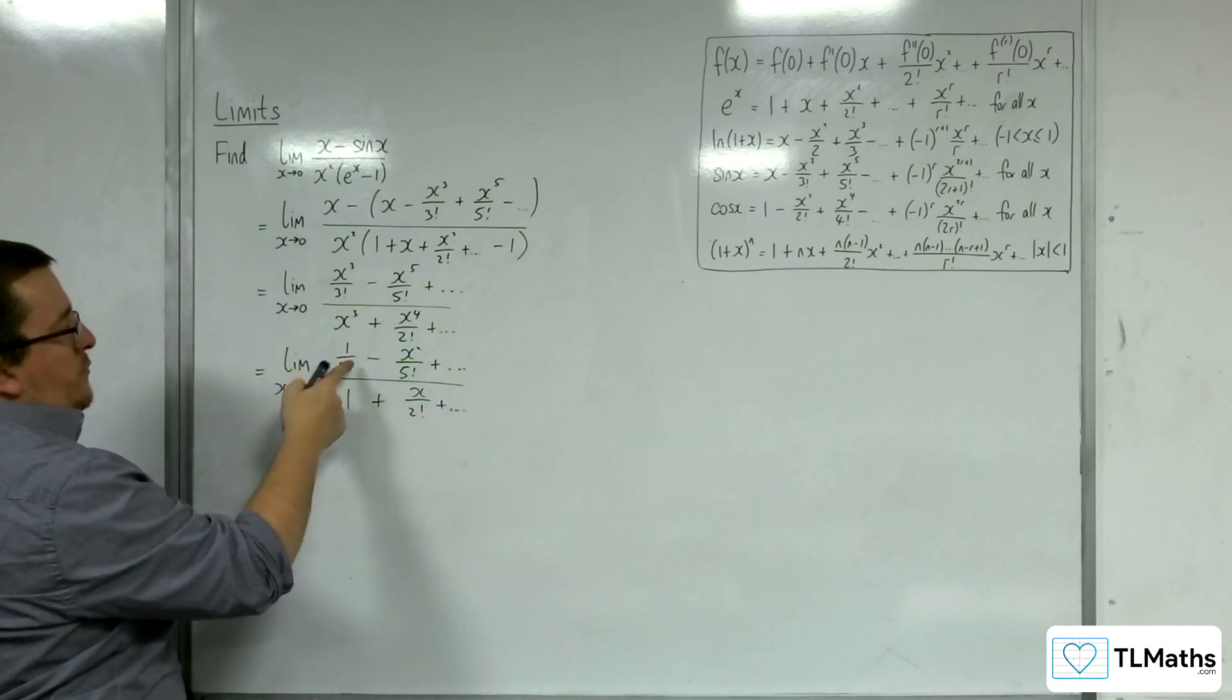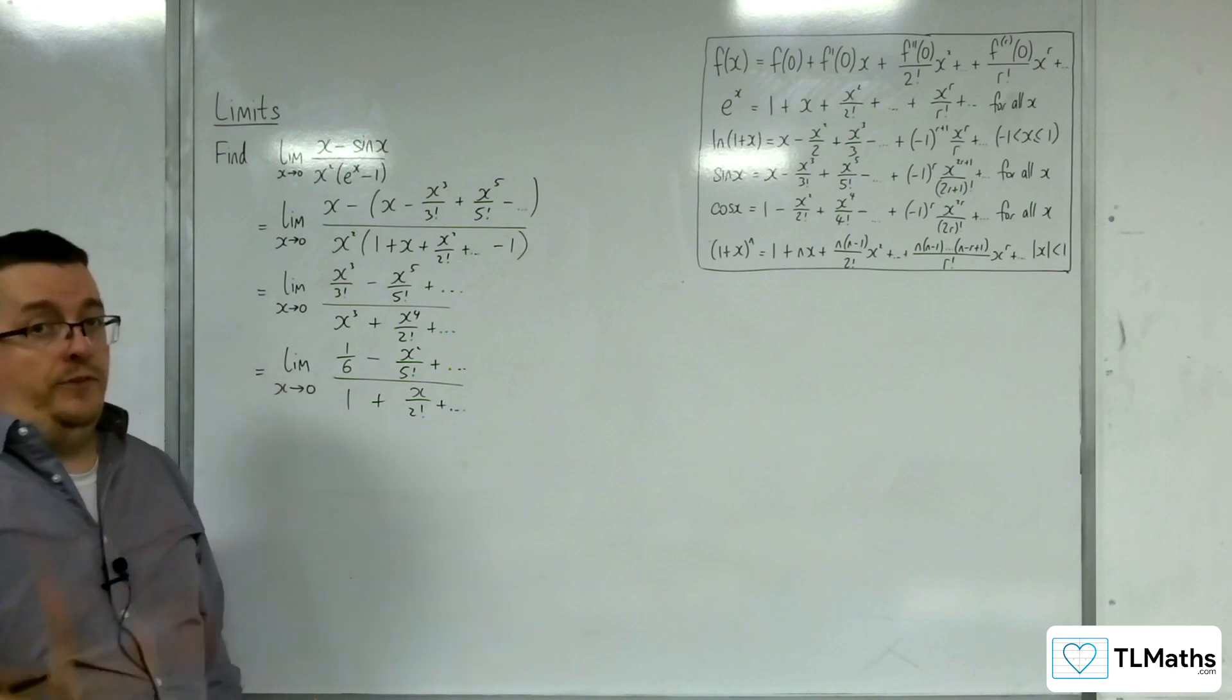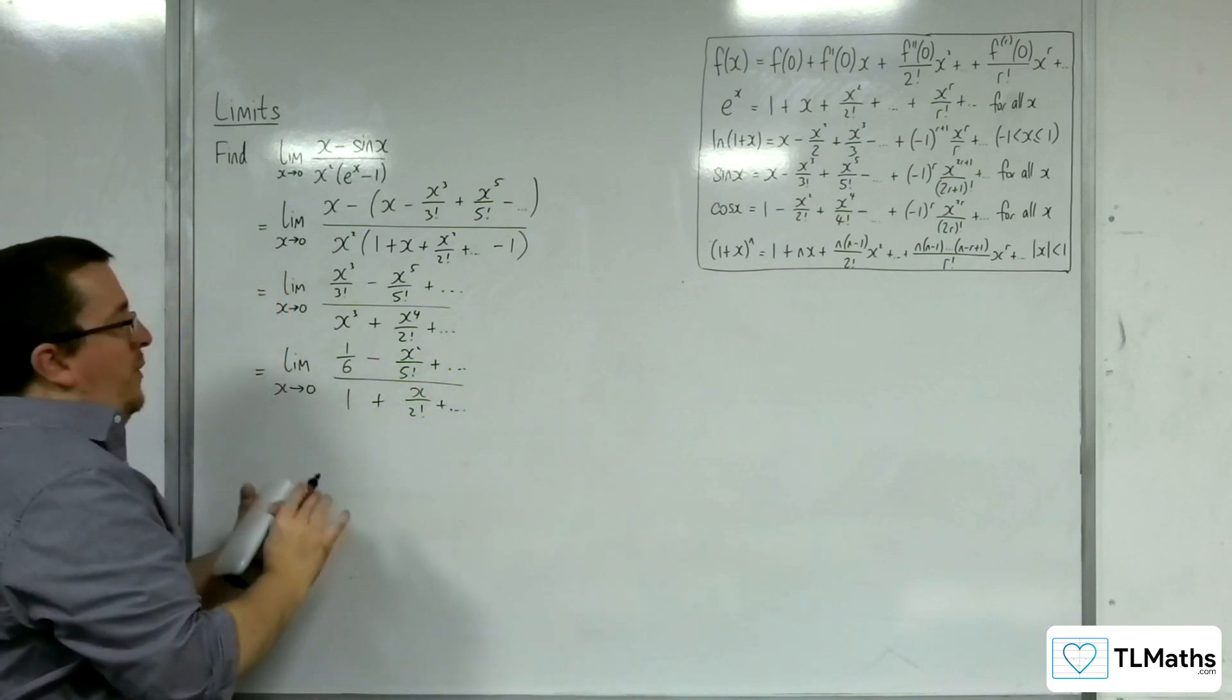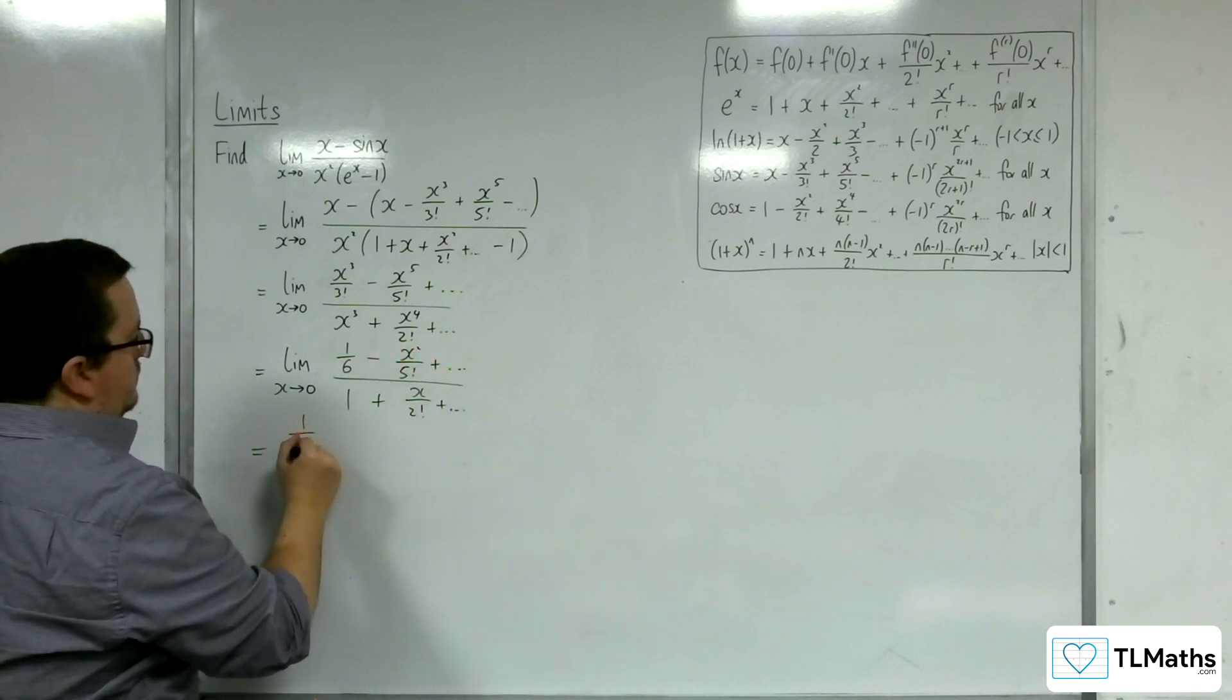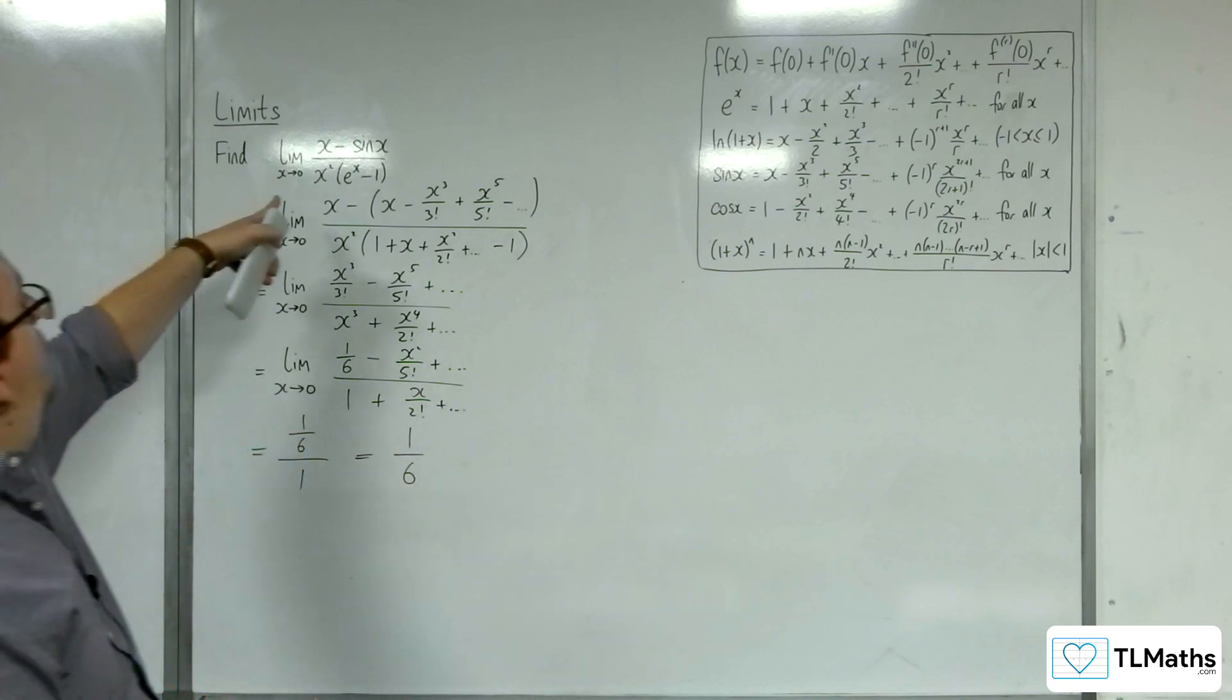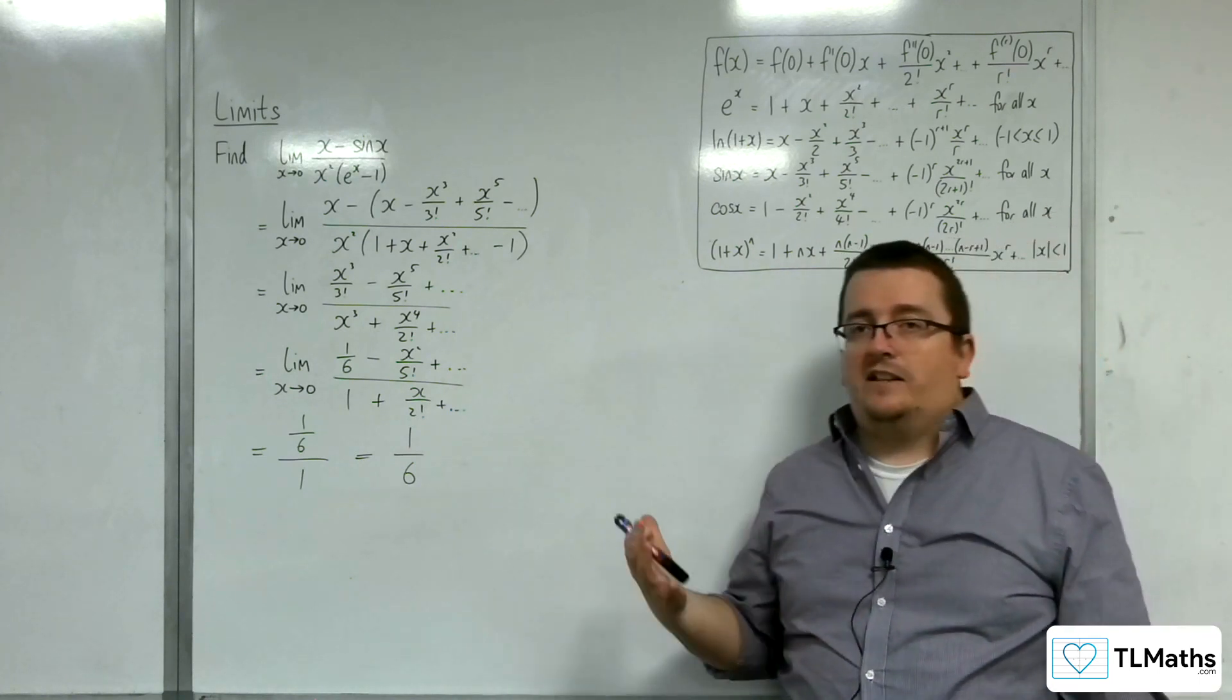Now, let's just simplify 1 over 3 factorial. That's 1 over 6. Now, if x tends to 0, if I think about substituting the x's for 0's, that term and all the next terms will be 0. That term and all the next terms will be 0. So everything will cancel apart from the 1/6 over 1. So I'd be left with just 1/6. And so the limit of this function as x tends to 0 is actually 1/6. And we can show that using the Maclaurin series expansions.